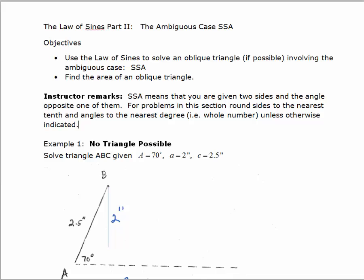We're going to look at the Law of Sines Part 2 and this is what's called the ambiguous case when you have side-side-angle or just two sides and the angle opposite one of them.